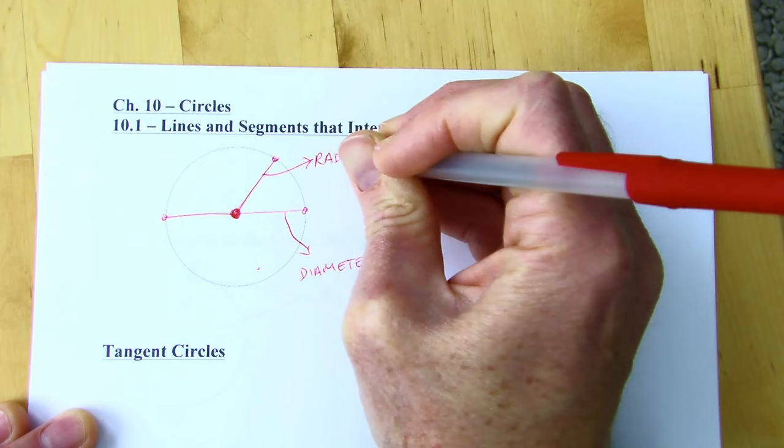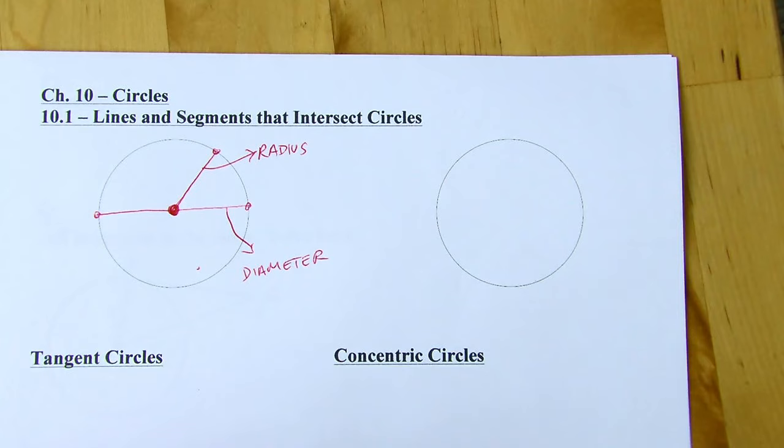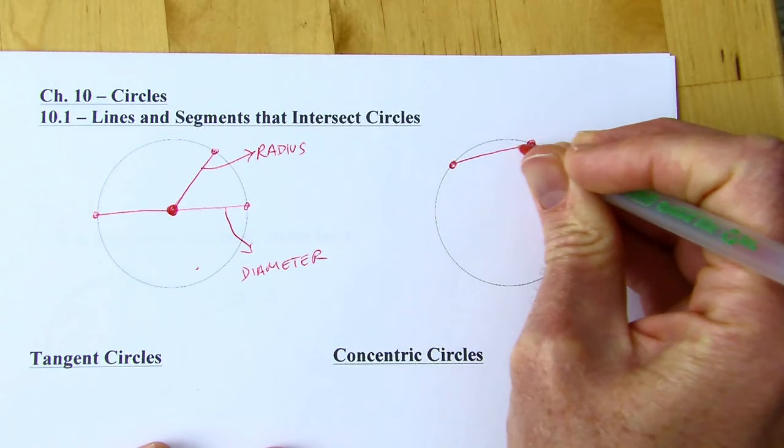And then some newer vocab. So if you take any two points on a circle and connect them with a line segment, this is called a chord — with an H.